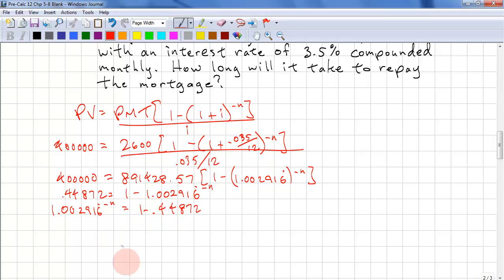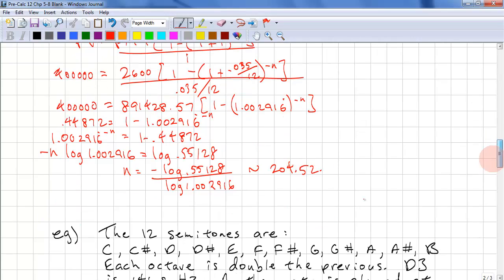Now we need to take the log of both sides in order to solve this exponent. So negative n log 1.002916 equals log, and we subtract that and we get .55128. So n equals negative log .55128 divided by log 1.002916, and that is approximately equal to 204.52. So we round that up, round up, because if you round down you won't have paid off the mortgage. So that's 205 months.